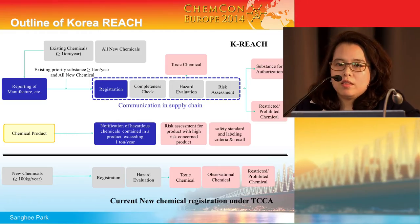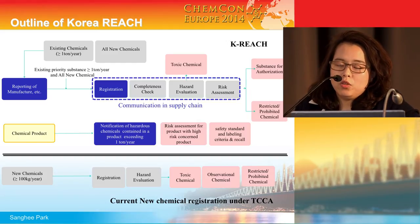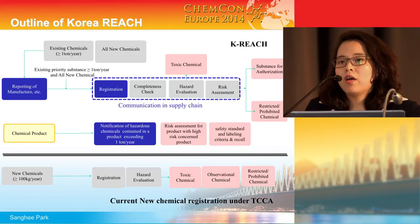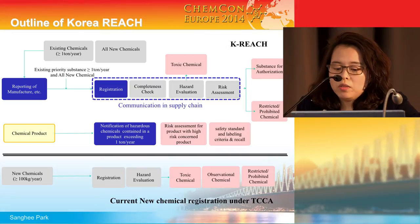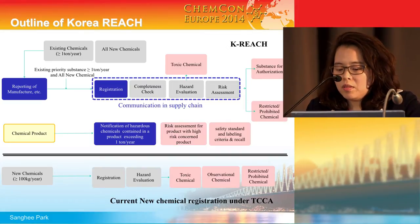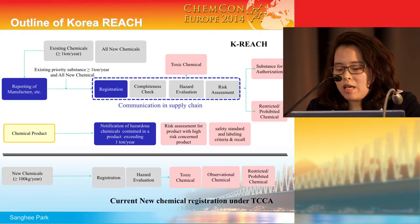In K-REACH, a product is basically a consumer product. If a product contains a hazardous substance more than one ton per year, it should be notified to the government in advance. The MOE will designate highly risk-concerned products for further risk assessment, and according to the assessment, the MOE will give safety standards and labeling criteria that industry must follow.